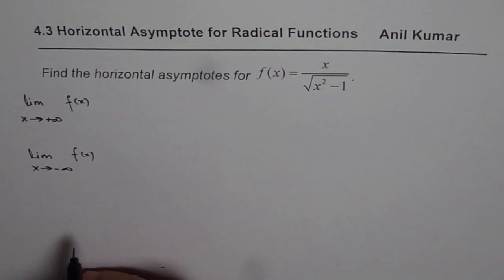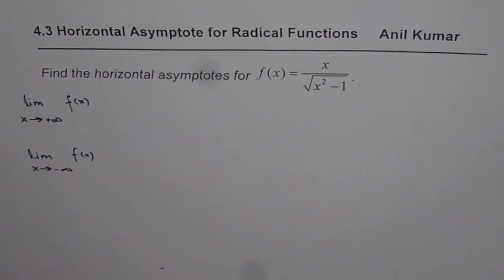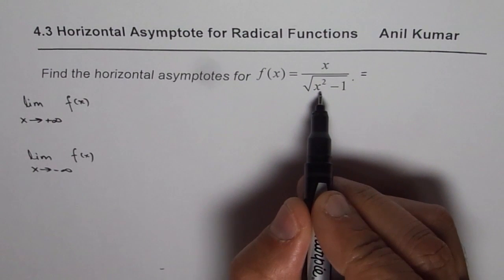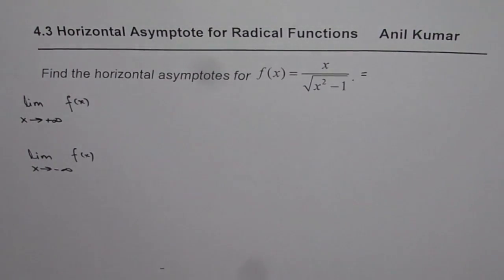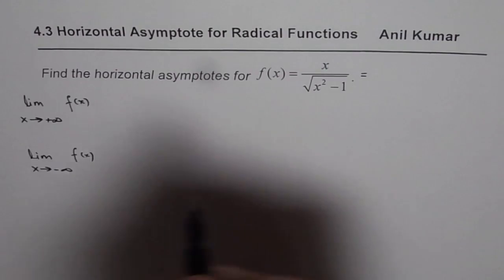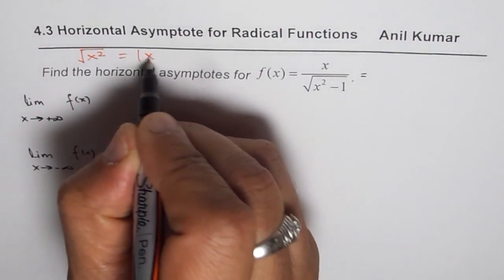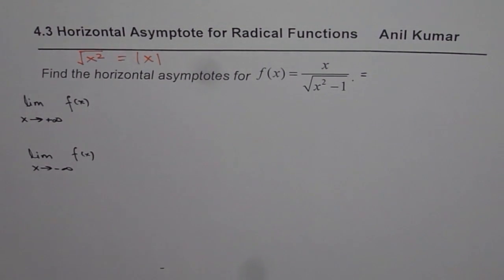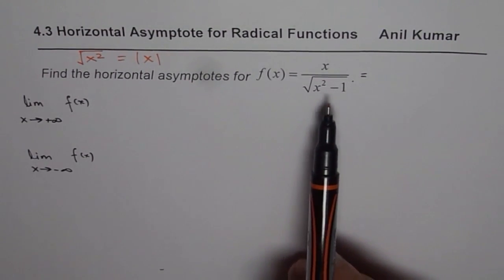If this limit exists, then the horizontal asymptote exists, otherwise not. The second important thing is — if some of you have seen my videos — you understand what the square root of x squared is. Square root of x squared is not x. Square root of x squared is the absolute value of x. Square root is always positive, so it is not x, it is absolute value of x. That will help you find the solution to this problem.